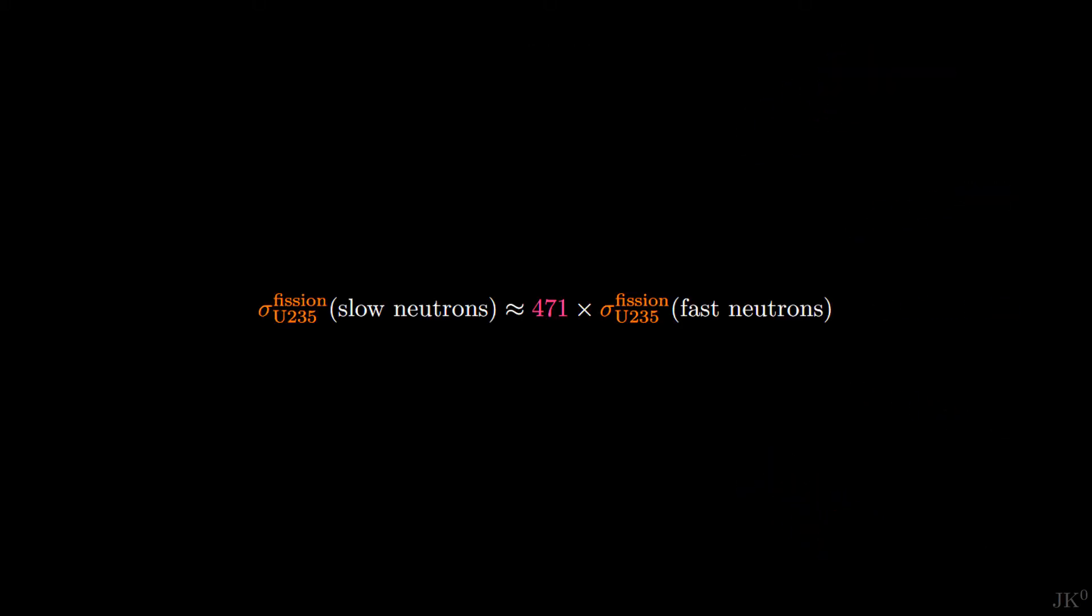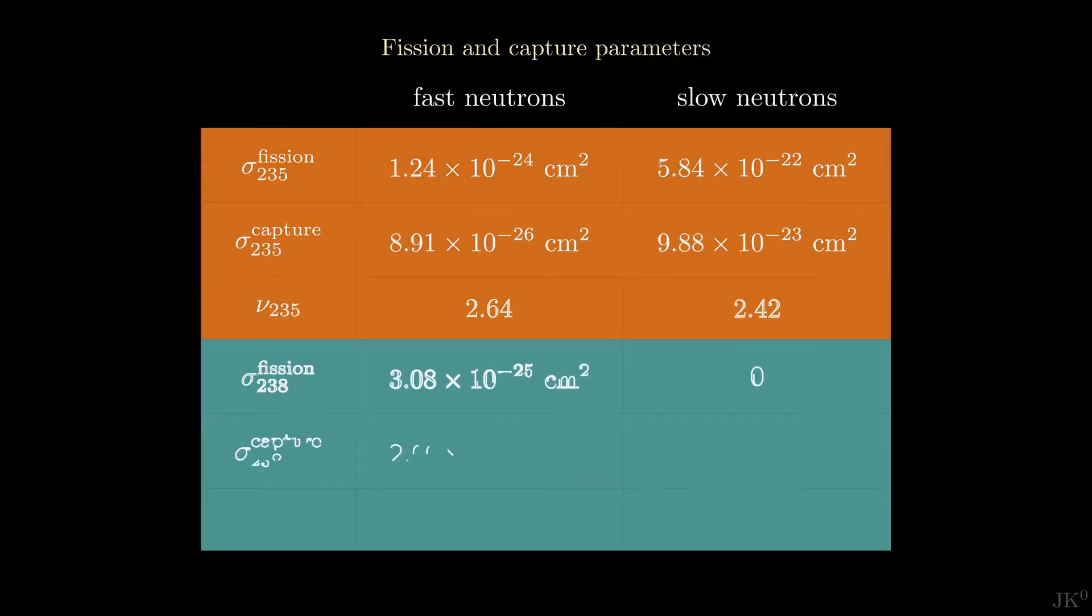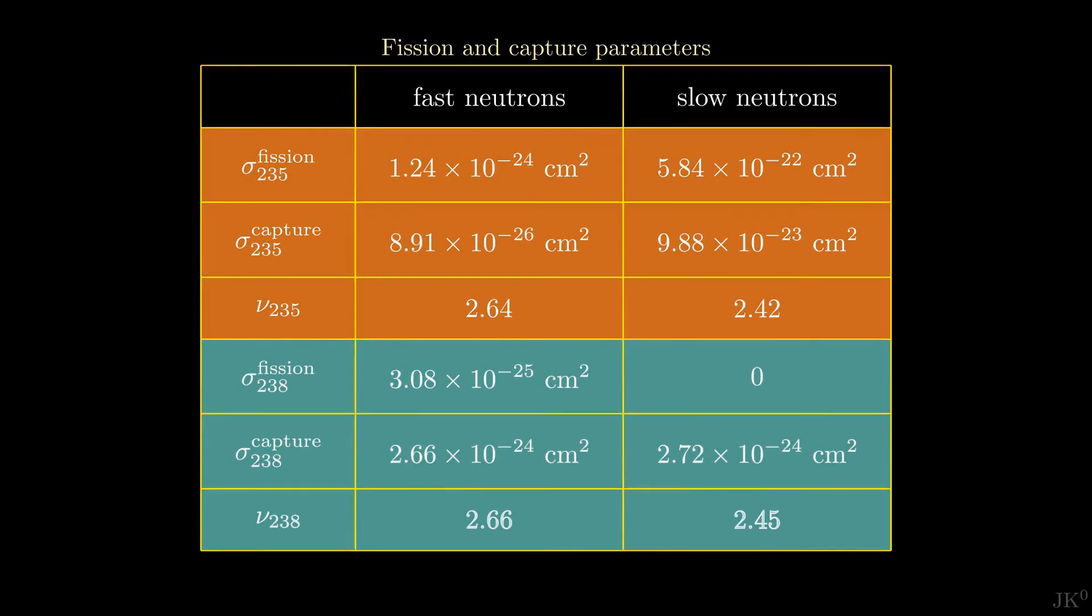In fact, the fission cross-section for U235 for slow neutrons is more than 400 times as high as the fission cross-section for fast neutrons. Once again, we have 6 parameters to add to our previous table, now for slow neutrons.